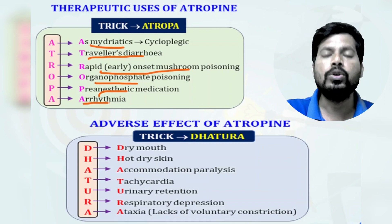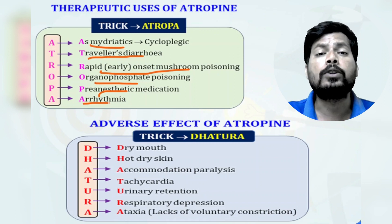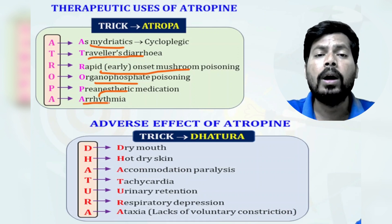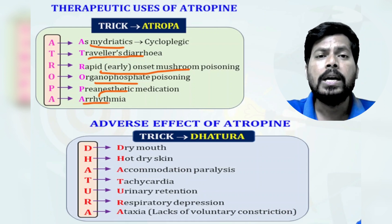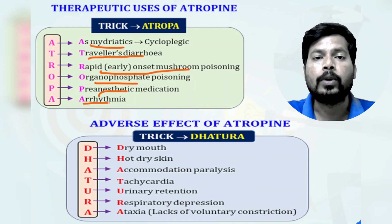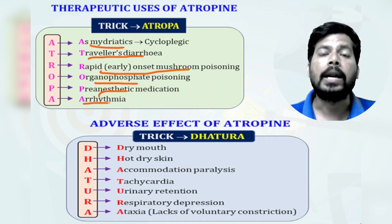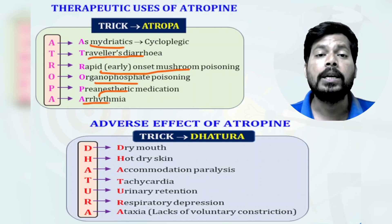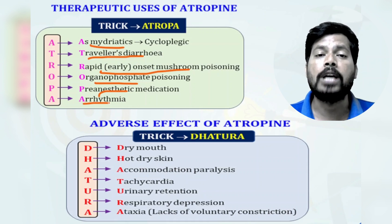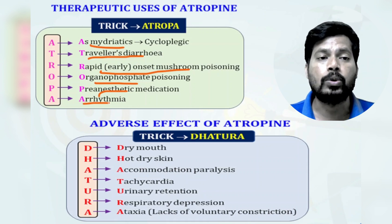Atropine is derived from Atropa belladonna, belonging to the family Solanaceae, and is commonly known as a tropane alkaloid. Atropine is a parasympatholytic that blocks muscarinic receptors and shows action opposite to acetylcholine, which is parasympathomimetic.